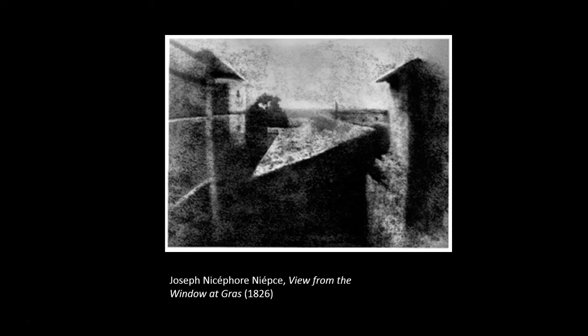From this point, the development of photography largely related to technological improvements in three areas: speed, resolution, and permanence. The first photographs, such as Niépce's famous View from the Window at Gras, required a very slow shutter speed — a very long exposure period. In this case, the photographer had to have the camera on the subject with the shutter open for about eight hours.